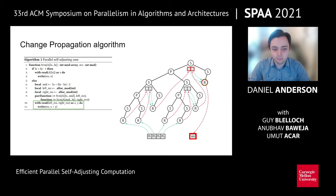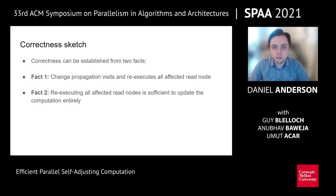Correctness relies on two facts. First, the change propagation algorithm correctly visits and re-executes all affected read nodes, which is established by induction on sequential dependencies. Second, re-executing just the affected read nodes is sufficient to update the computation — this follows from the write-once restriction and determinism, meaning that once a value is written to a modifiable in a rerun, that value always survives to the output since it cannot be overwritten.